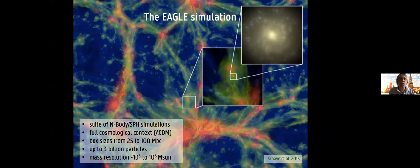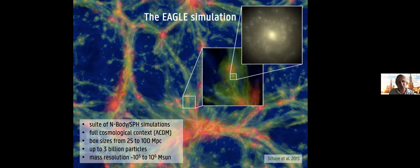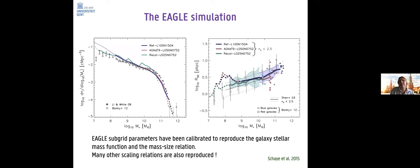Eagle contains up to 3 billion particles. The volumes are large, so resolution is typically about 10^5 to 10^6 solar masses — meaning a galaxy of 10^10 solar masses has only a few thousand particles. These simulations contain free parameters in their recipes, typically feedback efficiencies or star formation parameters — what we call subgrid parameters — calibrated so the simulation agrees with the galaxy stellar mass function. For Eagle, it was calibrated to reproduce the stellar mass function and the mass-size relation, but it also reproduces other scaling relations like the Tully-Fisher relation fairly well.